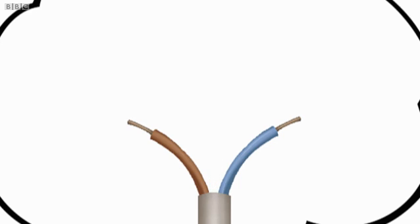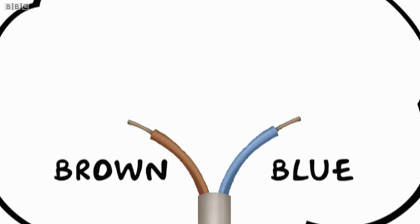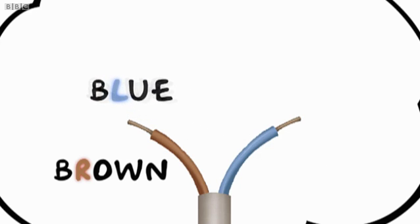So, you've got a brown and a blue wire. Look at the letter after the B on each one. That L on the blue tells you it goes on the left. And the R on the brown means it goes on the right.